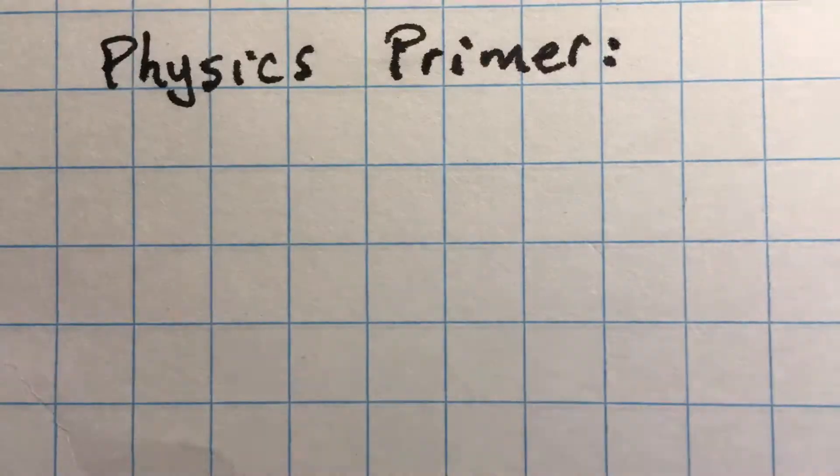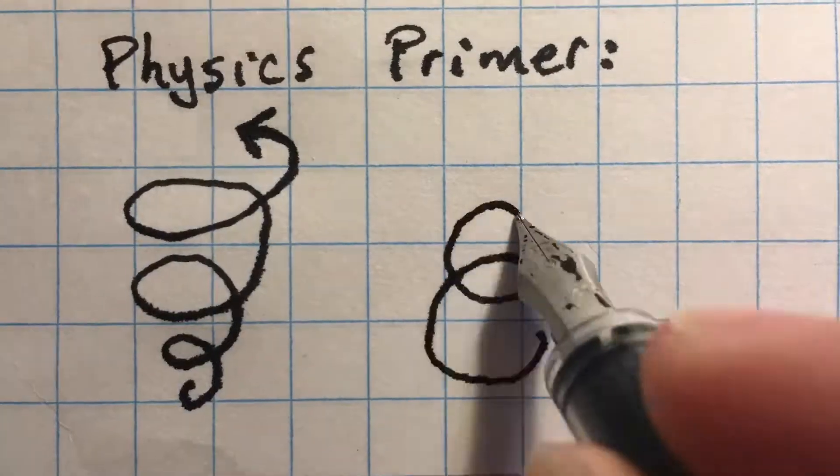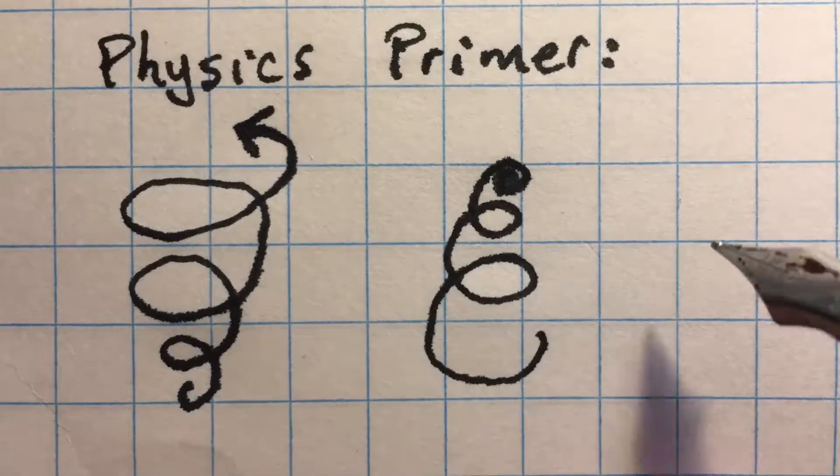A physics primer. In the study of motion, we have conjugate motion of force in motion, space and counter space.